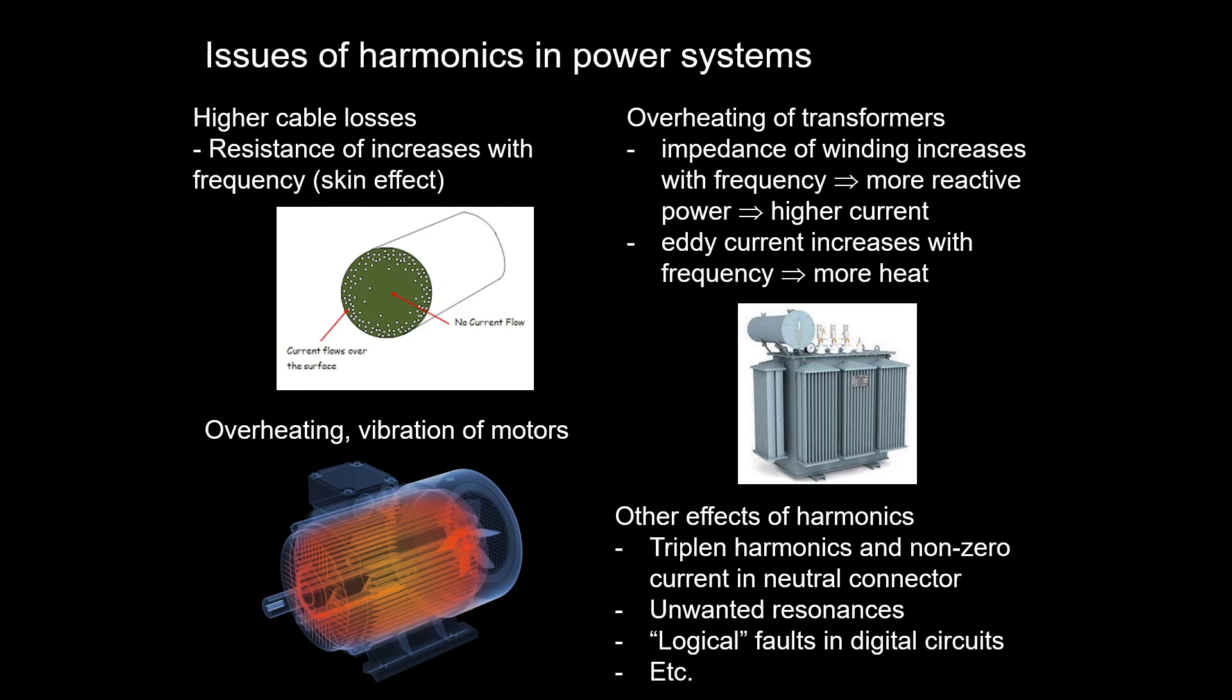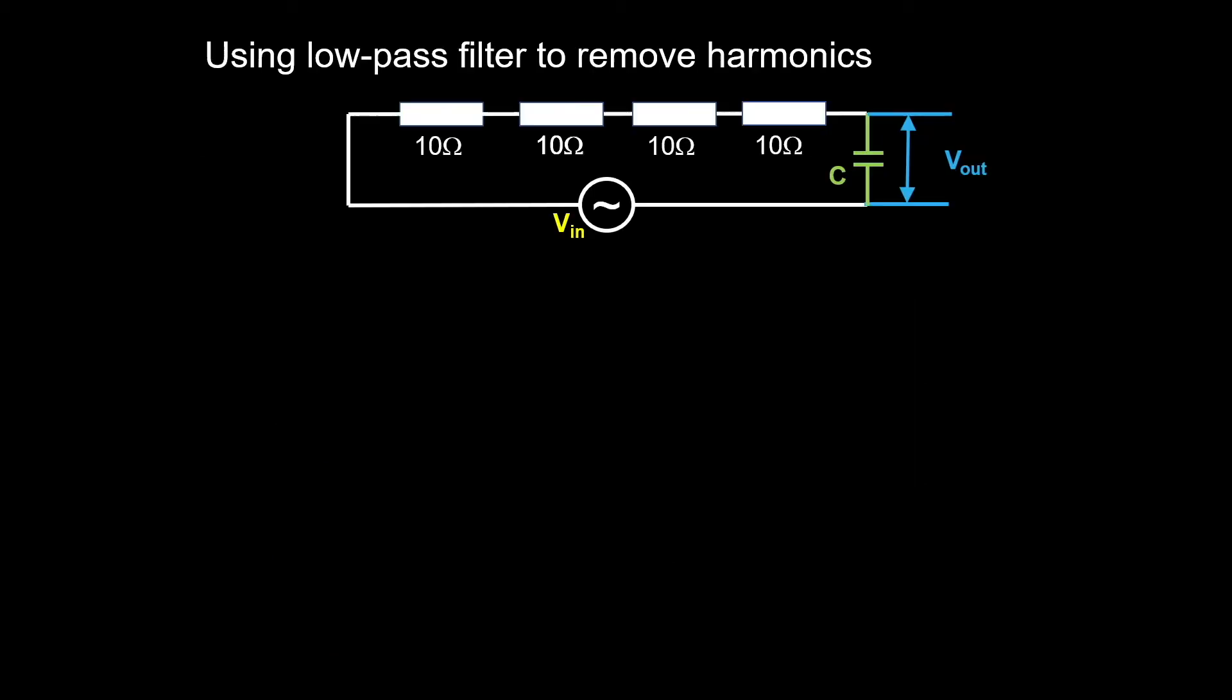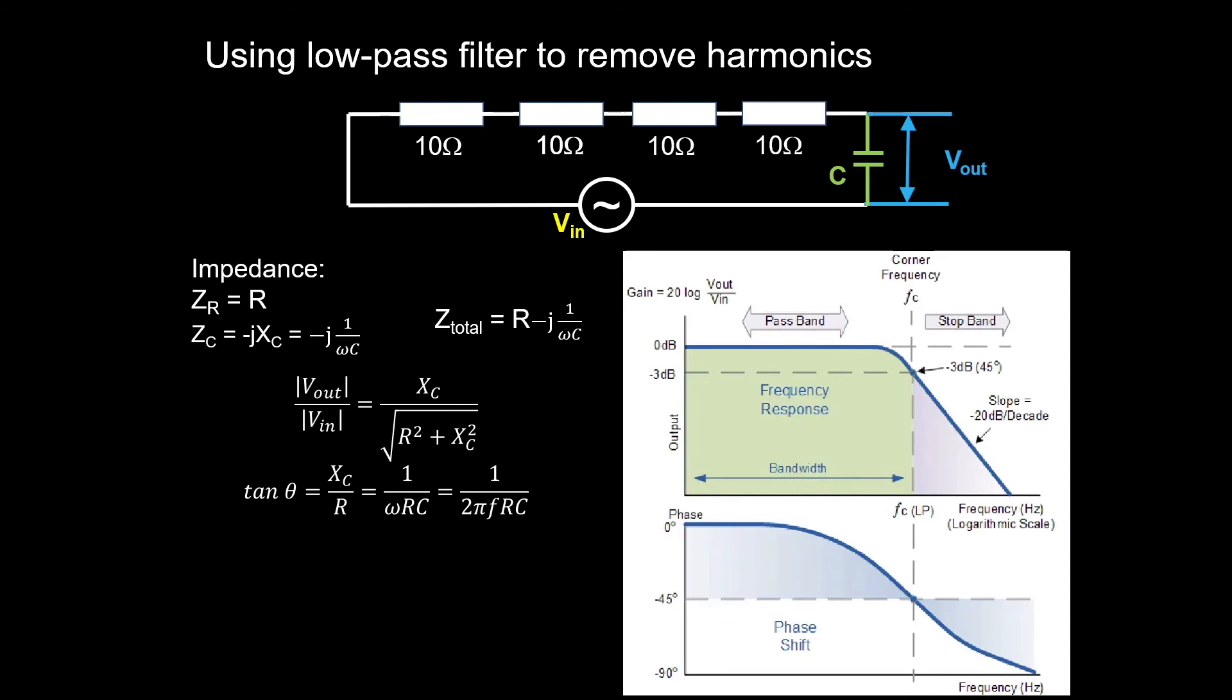There are other effects of harmonics such as tripping, harmonics, unwanted resonance, and also logical faults in digital circuits. In order to remove harmonics we can use a low-pass filter. Basically, we put in an extra capacitor into the circuit. Since the resistors and capacitor are in series, the impedance looks like this, and the output voltage depends on the resistance and also the reactance of the capacitor.